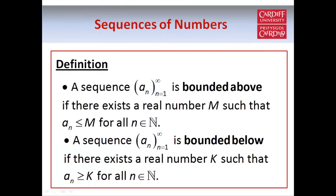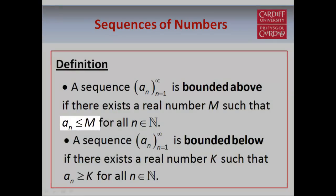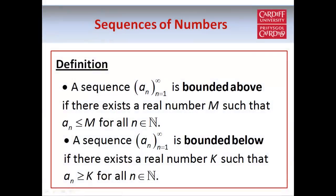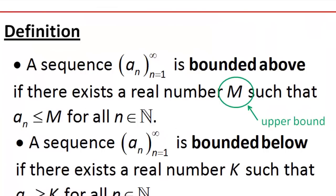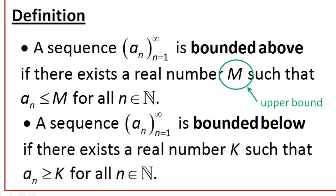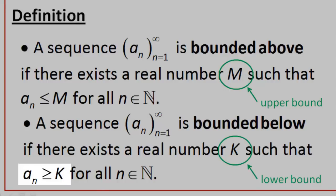We say that a sequence is bounded above if it's possible to find some real number m such that all of the terms in the sequence are less than or equal to m. This number m is called an upper bound. Similarly, a sequence is bounded below if we can find a lower bound k such that all of the terms in the sequence are greater than or equal to k.